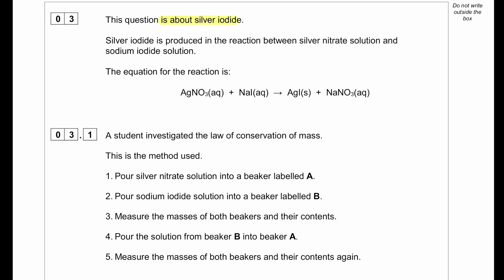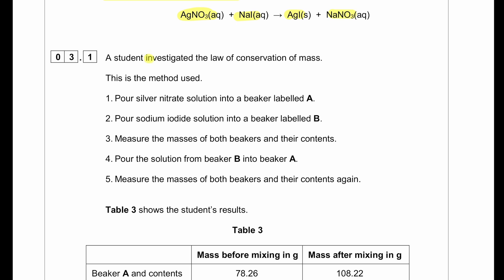This question is about silver iodide. Silver iodide is produced in the reaction between silver nitrate solution and sodium iodide solution. The equation for the reaction is: silver nitrate plus sodium iodide gives silver iodide and sodium nitrate. The student investigated the law of conservation of mass. Pour silver nitrate solution into a beaker labeled A, pour sodium iodide solution into a beaker labeled B. Measure the masses of both beakers and their contents. Pour the solution from beaker B into beaker A. Measure the masses of both beakers and their contents again.